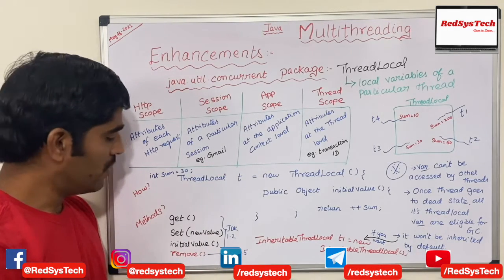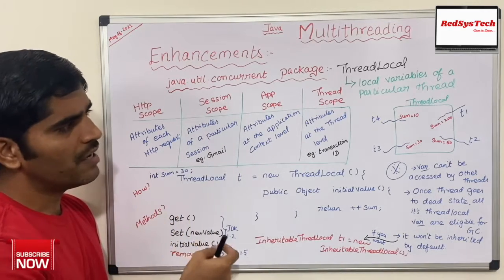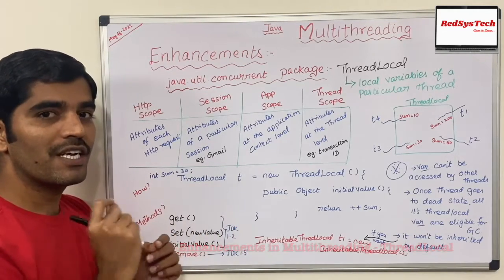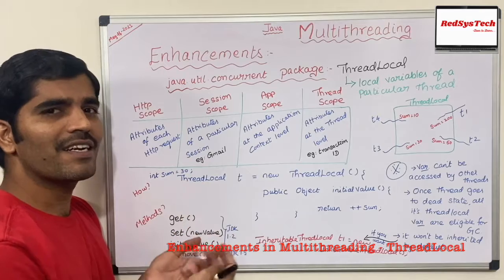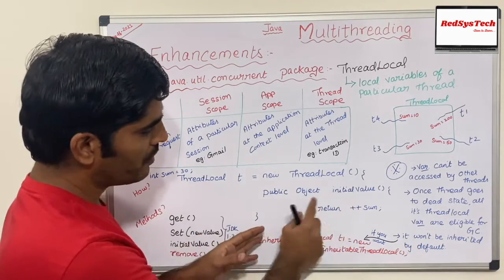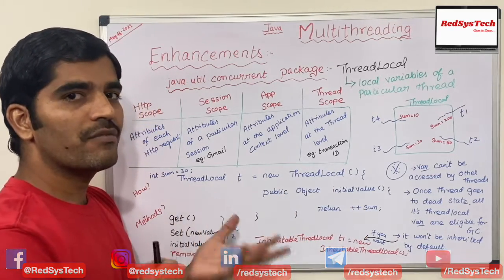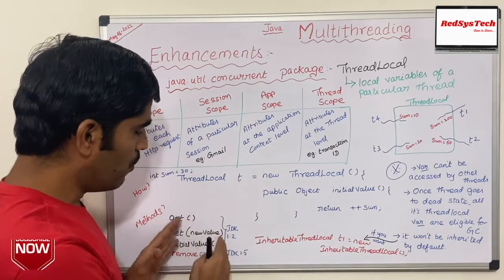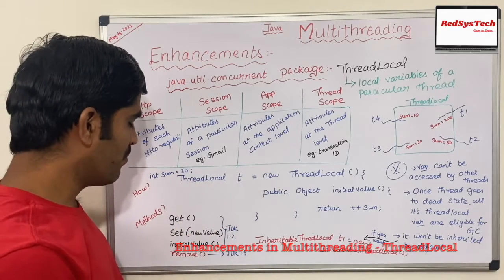There are multiple methods defined inside the ThreadLocal class. The get() method retrieves the value of the ThreadLocal variable — if you want to get the value of 'sum', you call get(). The set() method lets you set a new value for that variable. The initialValue() method — declared as 'public Object initialValue()' — initializes the very first value for a particular variable; you can override it to set an initial value. These three methods — get, set, and initialValue — were all defined since JDK 1.2.